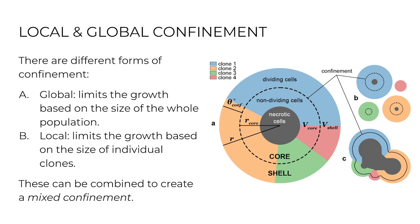However, we can to a degree simulate locality through a process we refer to as local confinement. Our confinement has two components: one is the global component, where we restrict the tumor population by the size of the whole tumor, and then there is the local component, where we restrict the growth of individual clones based on the size of the clone itself. For most realistic cases we mix the two.